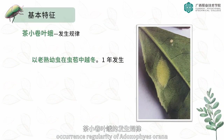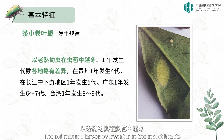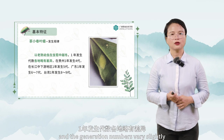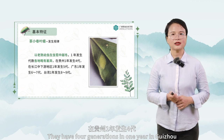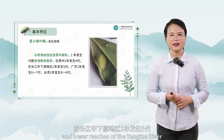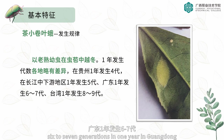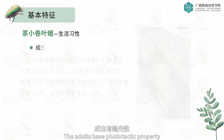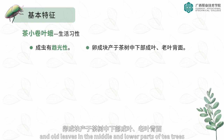Regarding the occurrence regularity of Adoxiphes orana, the old mature larvae overwinter in the insect bracts, and the number of generations varies slightly from place to place. They have four generations per year in Guizhou, five in the middle and lower reaches of the Yangtze River, six to seven in Guangdong, and eight to nine in Taiwan province. Adults have phototactic properties, and egg masses are laid on the back of adult leaves and old leaves in the middle and lower parts of tea trees.